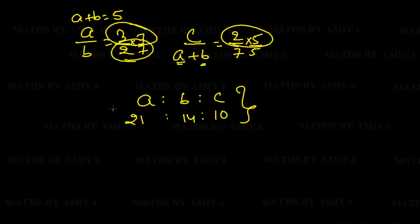So we get A = 21, B = 14, and C = 10. This is the approach when we have a relation like A+B common across ratios — we just find that relation and merge.